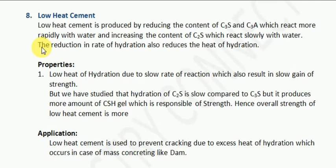Next, tricalcium silicate reacts. Tricalcium silicate also forms CSH gel and calcium hydroxide. The difference is that when dicalcium silicate reacts, the CSH gel it forms is higher in both quality and quantity, and more strength is achieved. Now, after revising these facts, let us see what low heat cement is.